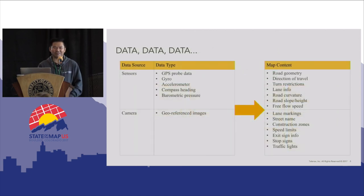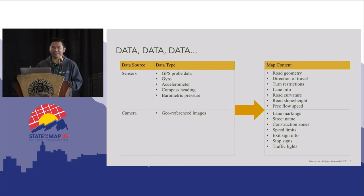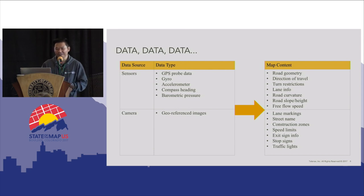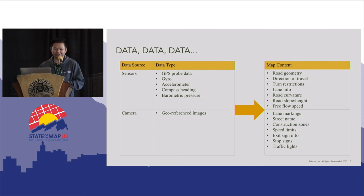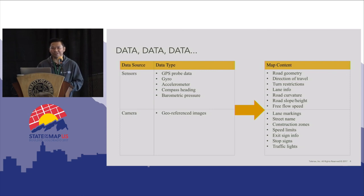With all the data that we collect, either from sensor or from camera — what does that translate to? We end up converting all that data into map content for OSM. That means we can use the information to improve road geometry, add turn restrictions, lane information, improve road curvature, free flow speed, and also add construction zones if the camera app is capturing photos where there's road construction.